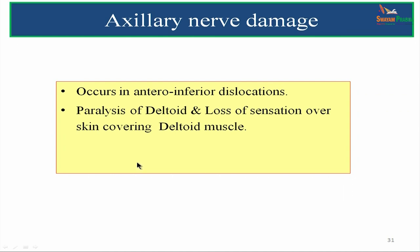Axillary nerve damage occurs in antero-inferior dislocations of the shoulder joint. The slipped head of the humerus can compress upon the axillary nerve in the axilla, resulting in paralysis of the deltoid muscle and loss of sensation over the skin covering the deltoid region. Once the axillary nerve is damaged, abduction is not possible and the patient loses sensation over the skin covering the deltoid region.